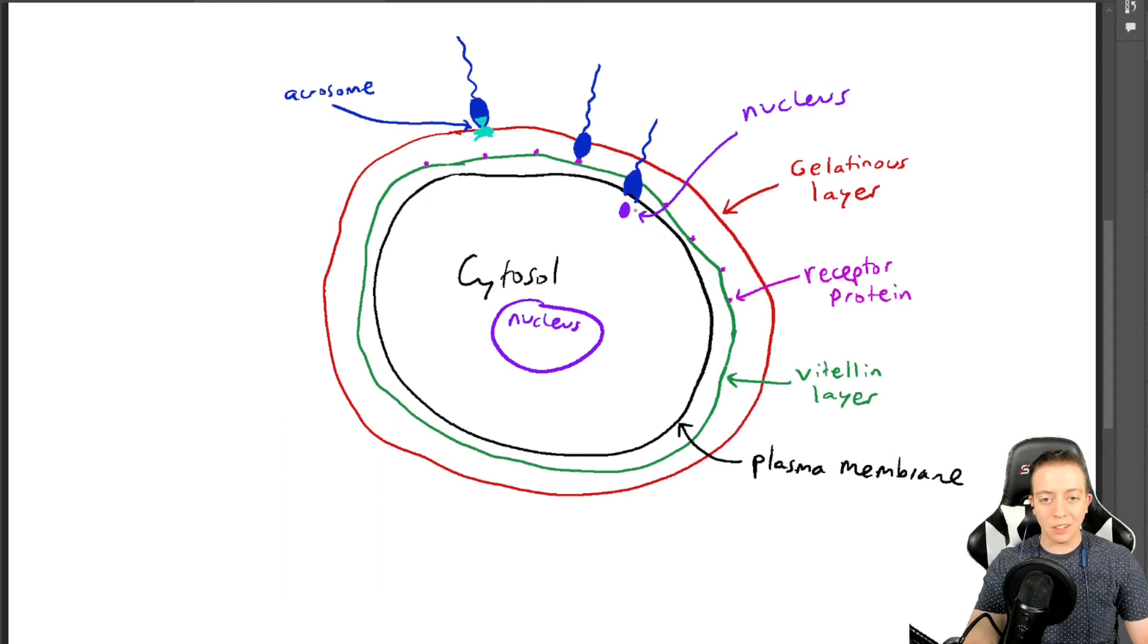So the sperm is going to fuse with the plasma membrane and the vitellin layer. It's going to kind of eject the nucleus of the sperm into the cytosol. And then from there, you are going to get DNA replication, and you're going to have the next phases of cleavage happening as we move from a one-celled zygote into multiple cells. We're not going to get into that, that's going to be covered in the next video.